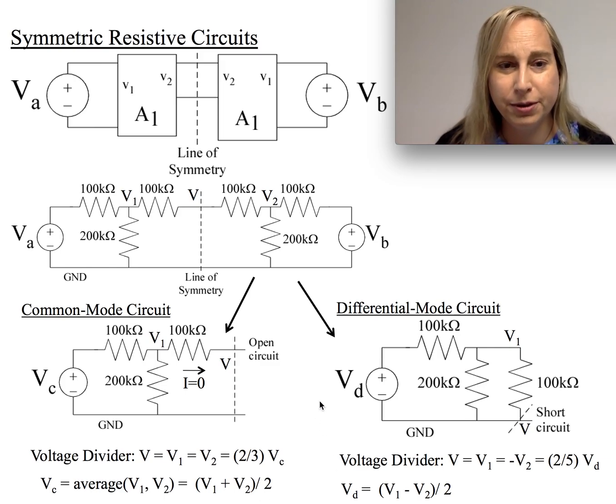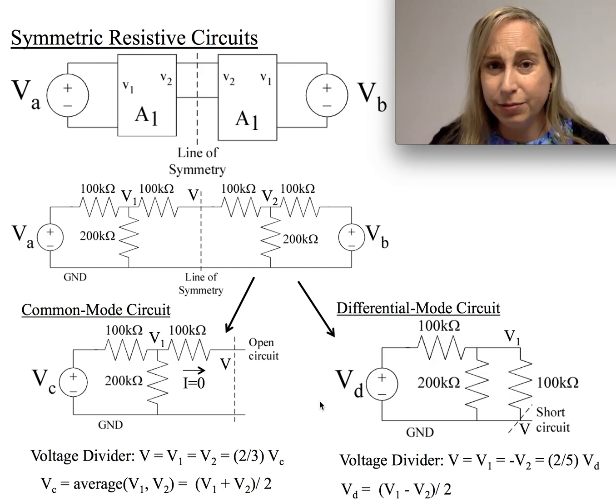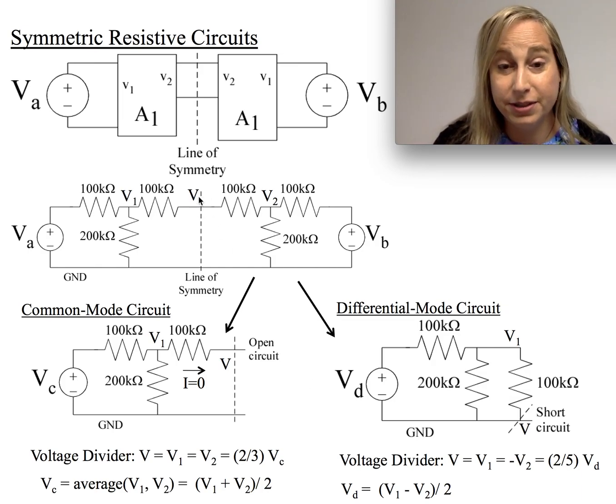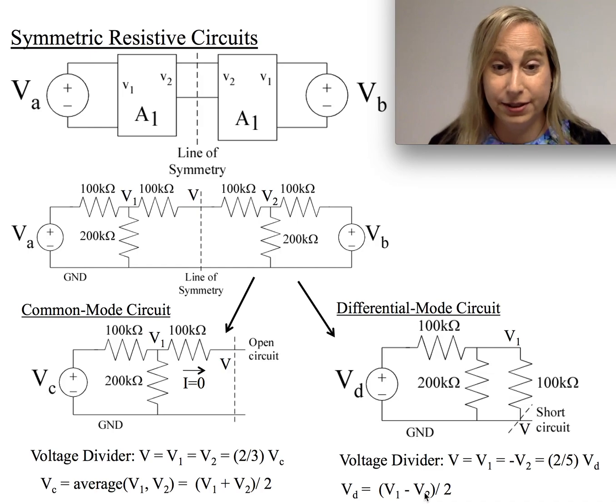Now for the differential mode, it gets similar but a little bit different in the sense of I take this intermediate node and I know that now this is going to be sitting to ground. And so because it's at a fixed point for the differential circuit, and what I'm going to be doing is applying the differential voltage, which is going to be half of VA minus VB over two. So half of one side and then half on the other side of it to balance it.